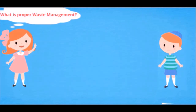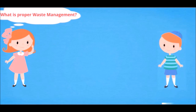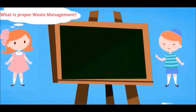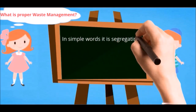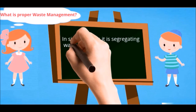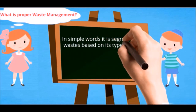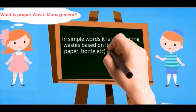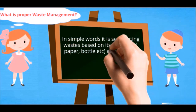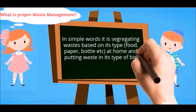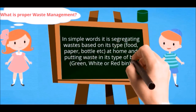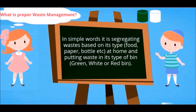Do you know what is proper waste management? In simple words, it is segregating waste based on its type at home - like food, paper, bottle, etc. - and putting wastes into its type of bin. Bin colors are green, white, or red.